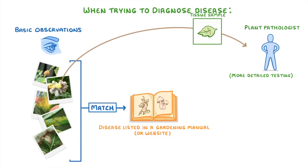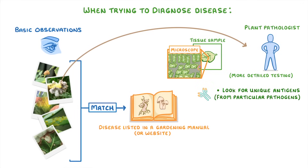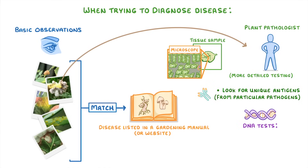For example, they could take a tissue sample and then look at it under a microscope so that they can see the problems in more detail. They could also look for unique antigens that come from particular pathogens, perhaps using monoclonal antibodies. Or even better, they could run DNA tests that look for pathogen DNA.